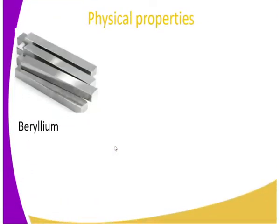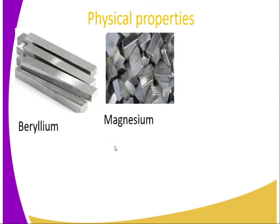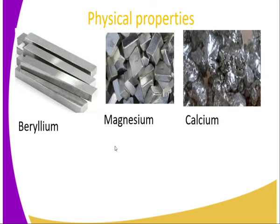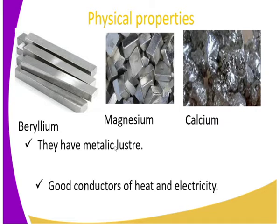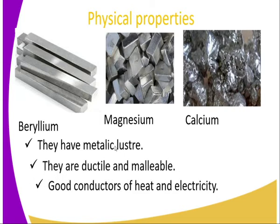Physical properties: beryllium, magnesium, and calcium are the first 20 element members. They have metallic luster. They are good conductors of heat and electricity. They are ductile and malleable. Ductile means they can be made into wire, while malleable means they can be made into sheets — that's why we have the likes of aluminium foil and iron.